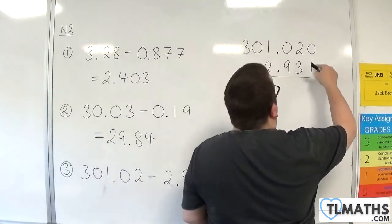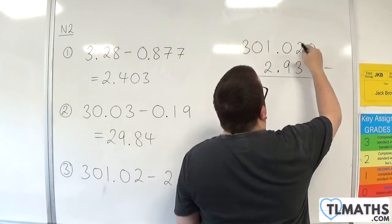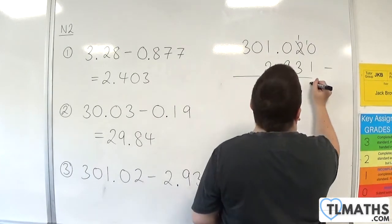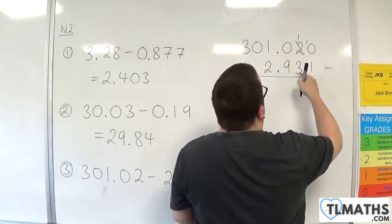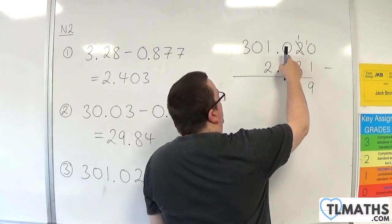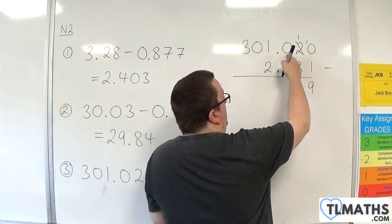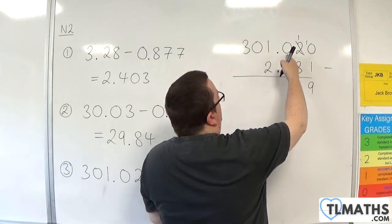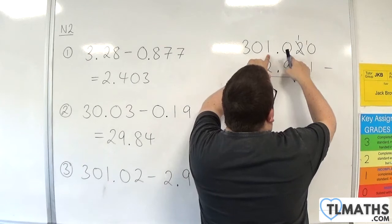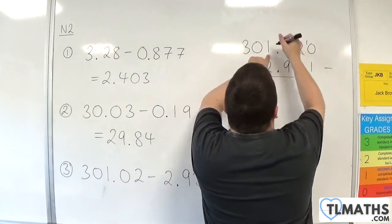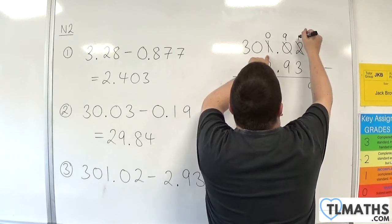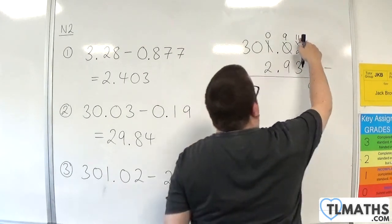We have 0 take away 1, which we can't do, so we need to borrow 1 from the 2. It's going to become 1, and now we've got 10 take away 1, which is 9. 1 take away 3, we can't do, so we need to borrow 1 from the 0, but it's got none for us to borrow. So we then need to think about 10 and taking away 1. Borrowing 1 from the 10, so 10 will become 9, and I've borrowed 1, so I now have 11.